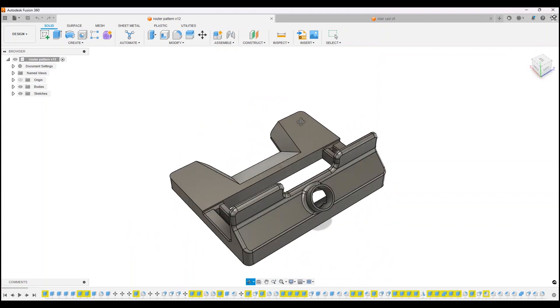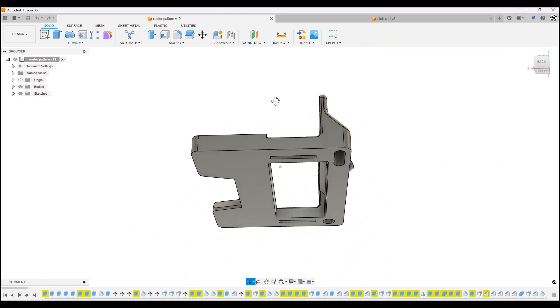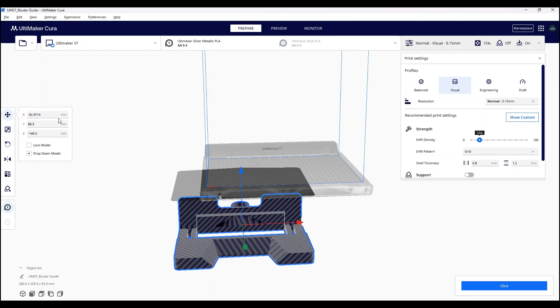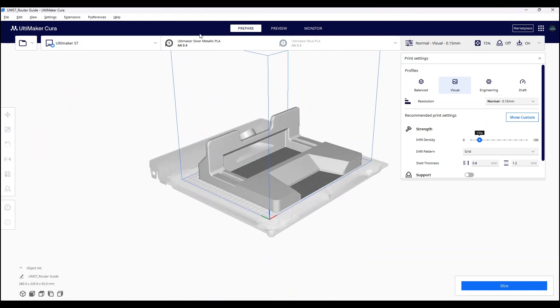In this design, I included an outlet so that the vacuum can be hooked up to extract any sawdust that is generated from the routing. After designing my jig in Fusion 360, we brought the design into Cura.